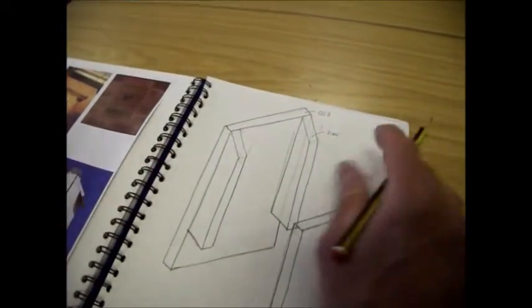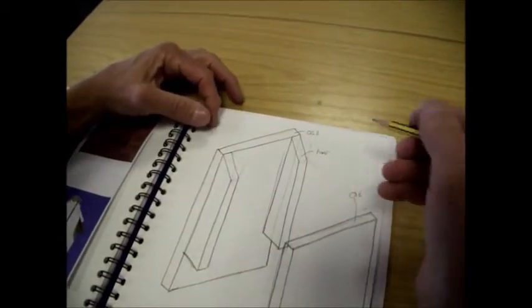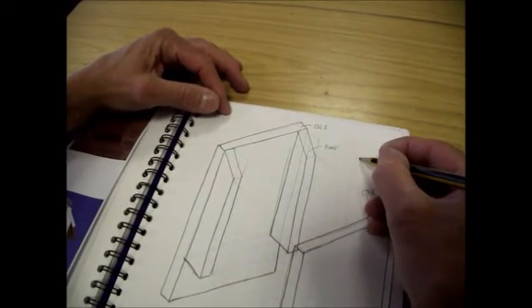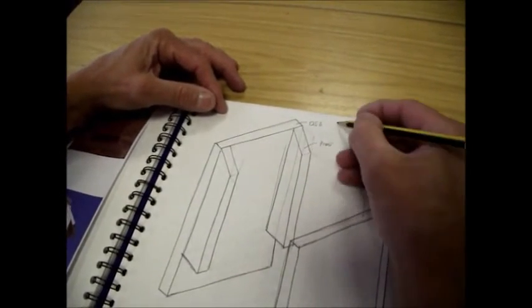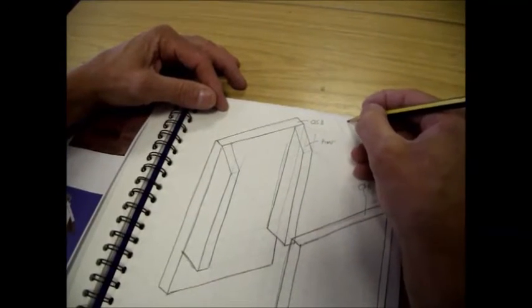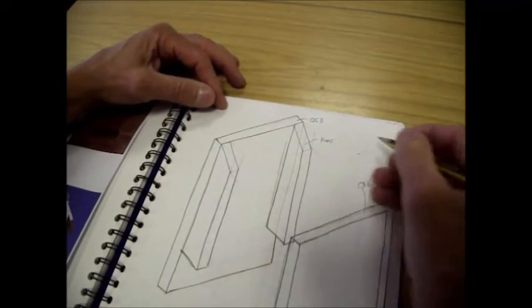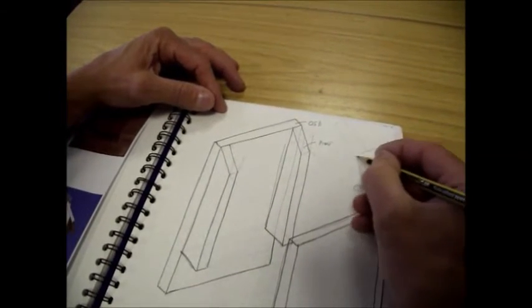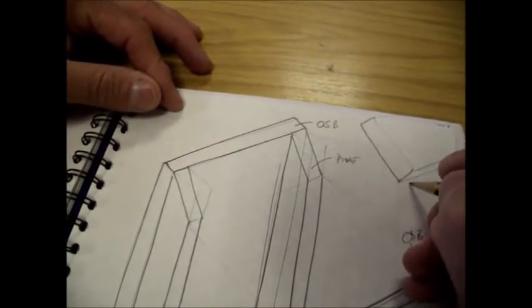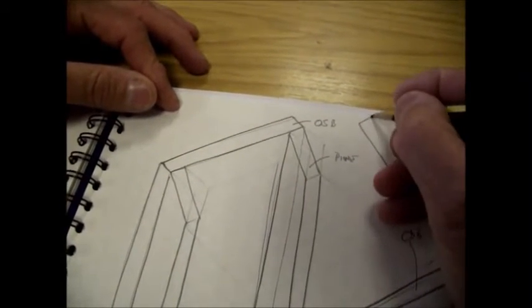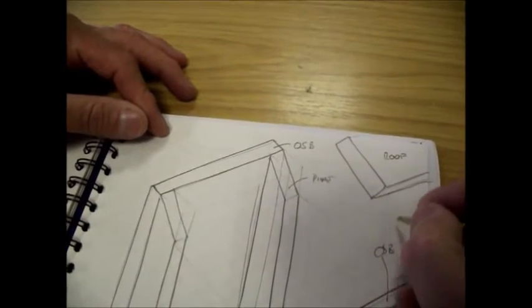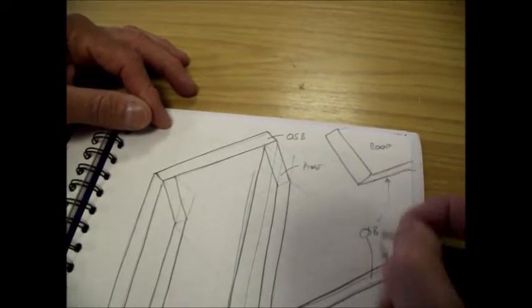Now we've got the roof as well which I haven't quite got enough room on this piece of paper to draw it but basically I'm just going to draw the corner of it here so that angle there is parallel with where the roof will be on the top here and it goes off in that direction and that is of course OSB as well.